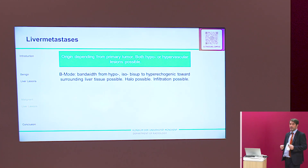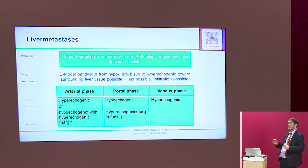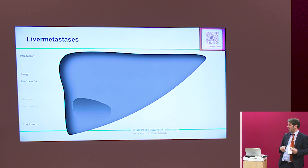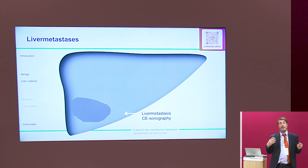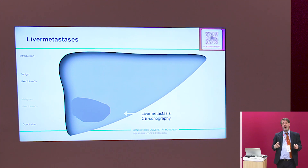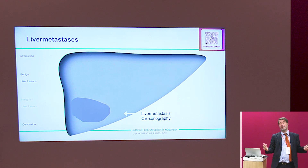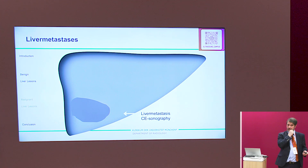Moving to malignant liver lesions: the most common is liver metastases. Depending on the primary tumor, they can be hyper-, hypo-, or isoenhancing in the arterial phase. In the portal venous and late phase, you see very fast washout compared to the surrounding tissue — most of the time less than 30 to 40 seconds. HCC, which is also a malignant liver lesion, has a much later washout. Note that 5% of all HCCs occur in a non-cirrhotic liver — but the behavior is the same.